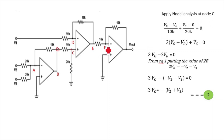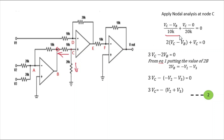Applying nodal analysis at node C. You could apply the potential divider rule directly to get VC, but I will use nodal analysis. Node C has only two branches, and both currents are outgoing. So: (VC − VB)/10K + (VC − 0)/20K = 0. Solving: 2VC − VB + VC = 0, which gives 3VC − 2VB = 0.